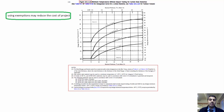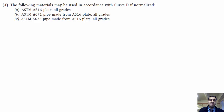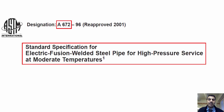It's a good time to review one note and relaxation related to today's episode. You can see that there is Note 4 beside curve C, which says: the following materials may be used in accordance with curve D if normalized: A) ASTM A516 plate, all grades; B) ASTM A671 pipe made from A516 plate, all grades; C) ASTM A672 pipe made from A516 plate, all grades.